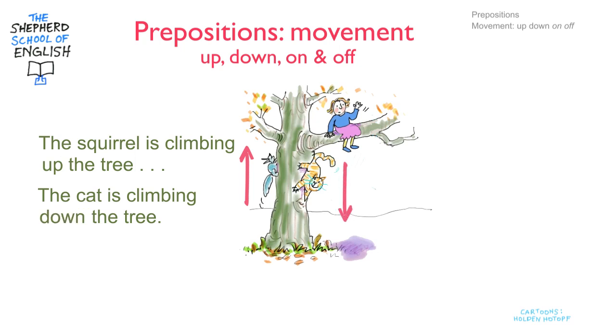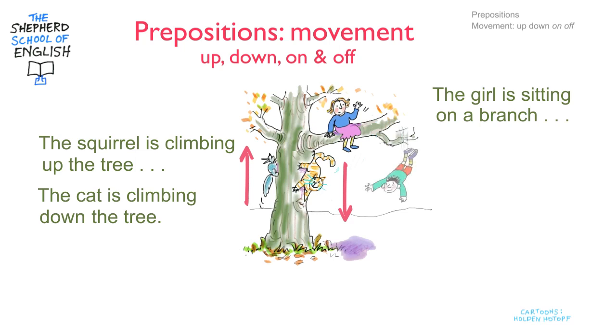Now look at the girl. The girl is sitting on a branch. And here's the boy. He was sitting on a branch, but now he isn't. He's fallen off the branch.